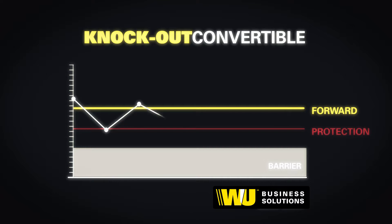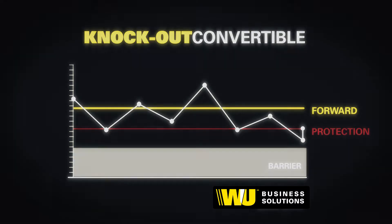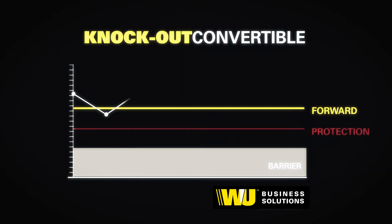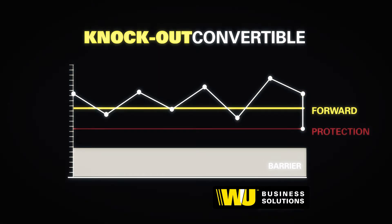First, should the market finish below the protection rate at expiry, you will deal your full amount at the protection rate. If the market finishes higher than your protection rate at expiry and has not touched the knockout rate during the life of the contract, you will be obligated to deal at the protection rate.